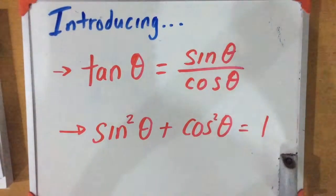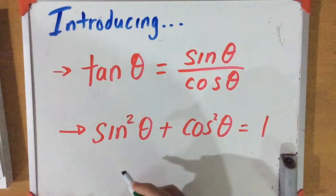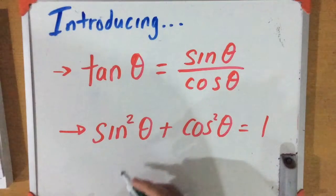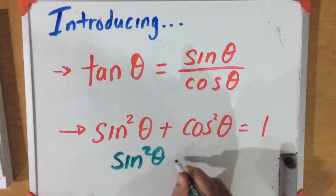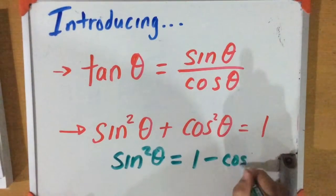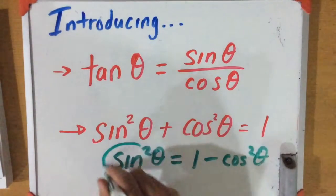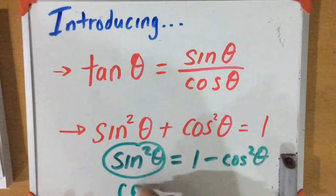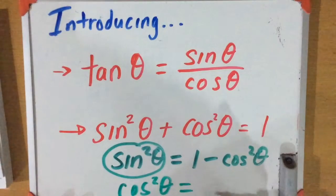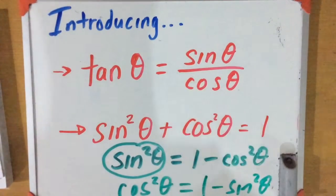The reason this comes in handy is because you can manipulate it, and quite often this helps out in proving identities. For example, sine squared theta is equal to 1 minus cosine squared theta. And you can also say cosine squared theta is equal to 1 minus sine squared theta. So you might have to manipulate these depending on your problem.